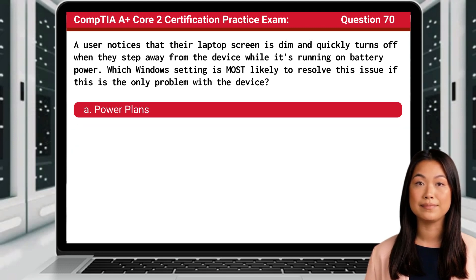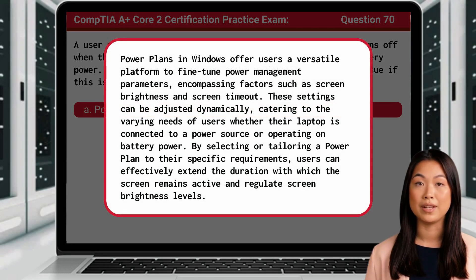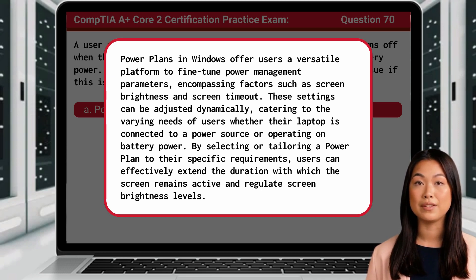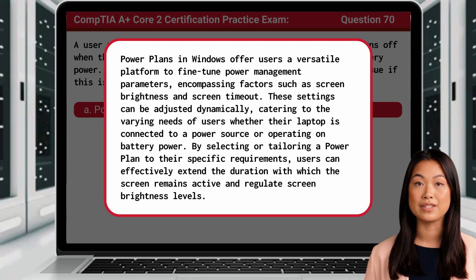The answer is A — Power Plans. Power Plans in Windows offer users a versatile platform to fine-tune power management parameters, encompassing factors such as screen brightness and screen timeout. These settings can be adjusted dynamically, catering to the varying needs of users whether their laptop is connected to a power source or operating on battery power. By selecting or tailoring a power plan to their specific requirements, users can effectively extend the duration the screen remains active and regulate screen brightness levels.